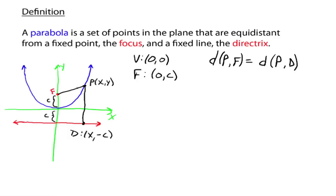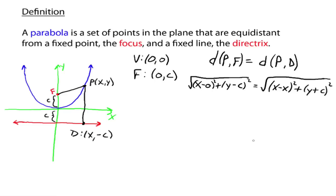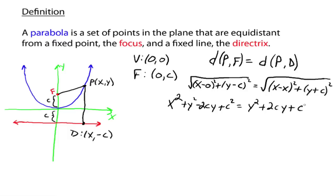To find the distance between point p and point f, you use the distance formula. Squaring both sides gets rid of the square roots. x minus 0 squared is just x squared. y minus c squared gives y squared minus 2cy plus c squared, which equals x minus x — that's 0 — so you're left with y plus c squared, which is y squared plus 2cy plus c squared. So now isolating x squared: the y squared terms cancel, the c squared terms cancel, and you're left with x squared equals 4cy.